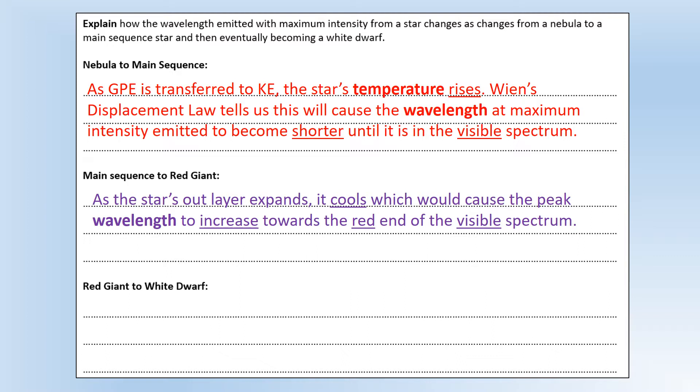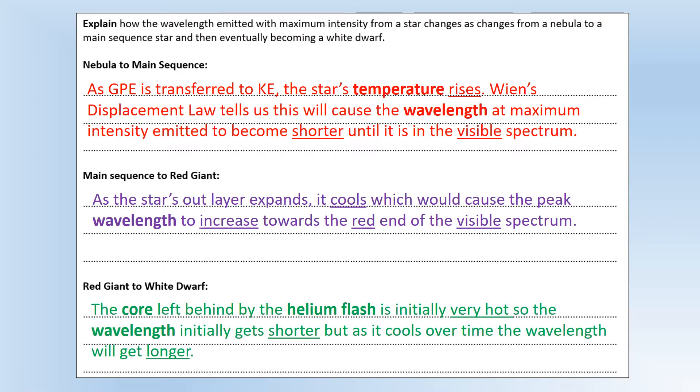Okay, so then looking at as it goes from a red giant to a white dwarf. The core left behind by the helium flash is initially very hot because it's just been fusing helium, so the wavelength emitted by it after the helium flash is going to get quite a bit shorter because it was red from the red giant. Now we've got the helium flash and it's going to be very hot, so we're going to get a much shorter wavelength. It typically can even go out of the visible spectrum and you initially form a white dwarf. But over time the white dwarf will cool down and the wavelength will get longer and longer, so you eventually get to the situation where you can't really see anything at all.